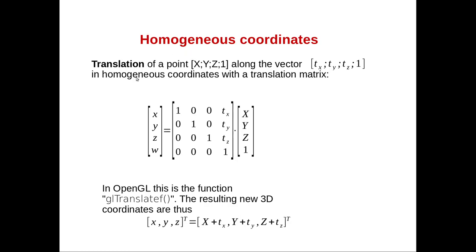Homogeneous coordinates can also be used for implementing a translation into a matrix. Usually we use a matrix to implement rotations of a 3D object, but translations appear as a sum. With this additional coordinate, translation becomes possible via matrix multiplication. Here we have our 3D coordinates of our object. In this matrix the three coordinates remain unchanged due to the diagonal of ones. Our w is 1 for an object, and the column belonging to the helper variable now contains a shift: tx, ty, tz.